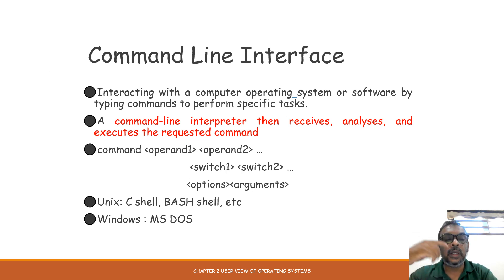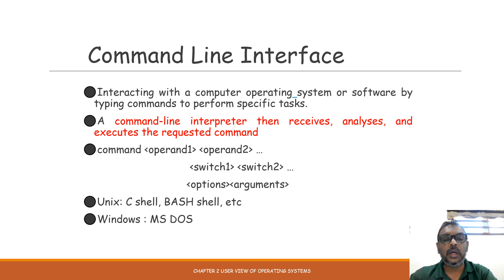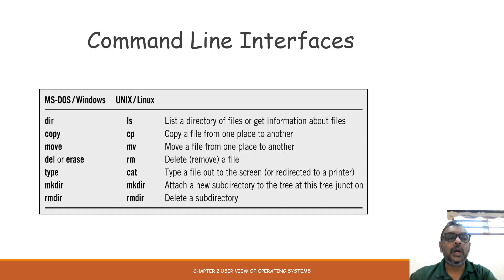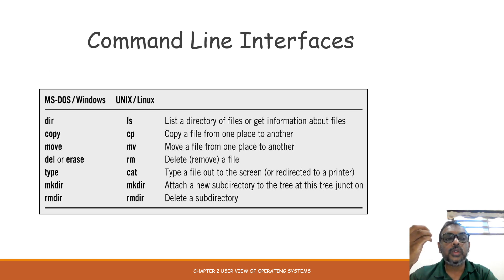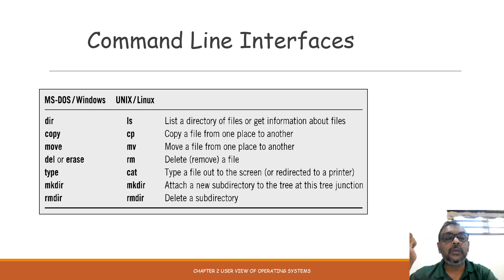In Windows Operating System, this command line interface is known as MS-DOS. However, in Unix it's known as C-Shell, Bash, or Shell. These are the normal examples of commands used in a command line interface. These commands — DIR, Copy, Move, Erase, Type, MKDIR, RD, RM, RMDIR — will each do a specific thing. These are the specific commands you need to know if you are running on a command line interface.